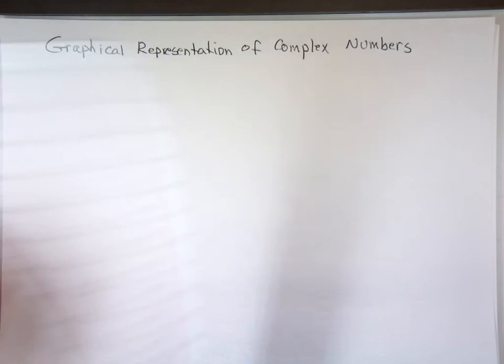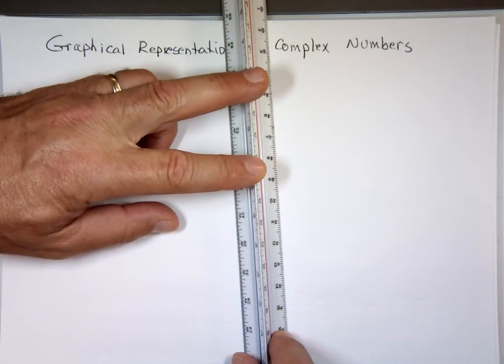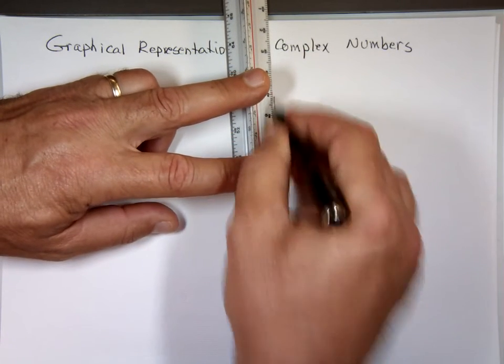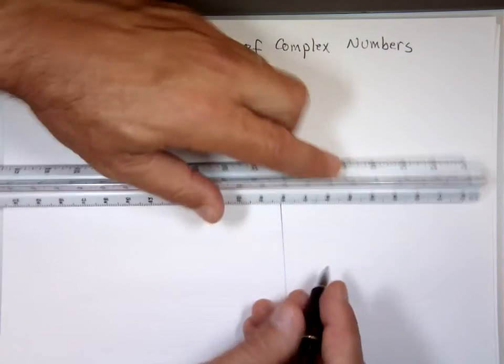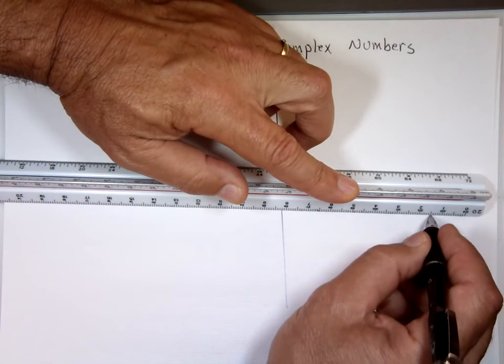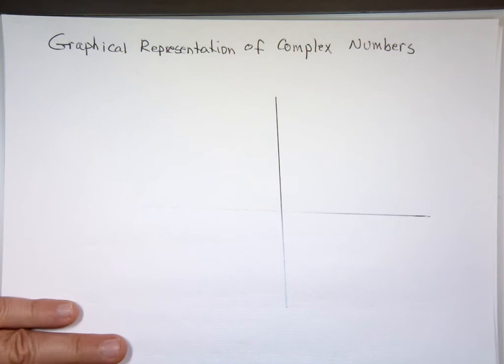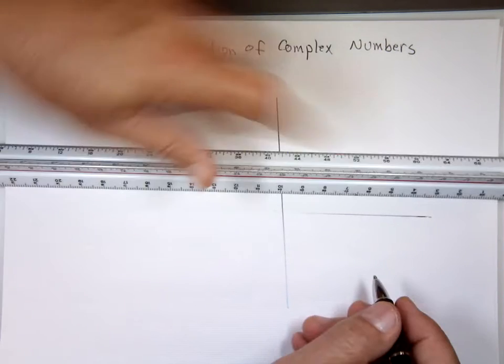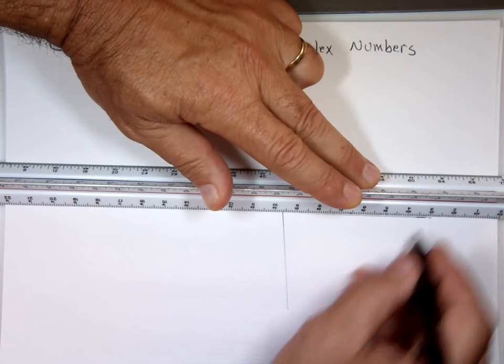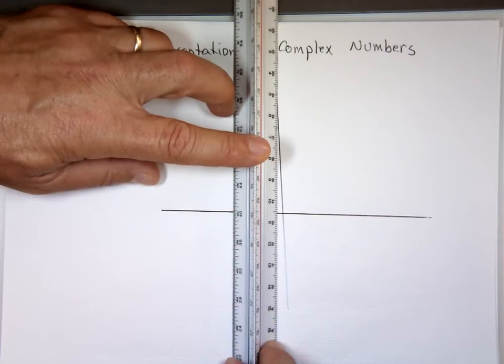To graph complex numbers, there we go, a point. First let me draw the x and y axes. The x-axis is always going to represent for us the real portion. So I don't know what happened to that pen, it looks like it's dying.